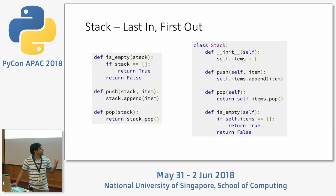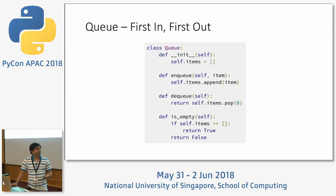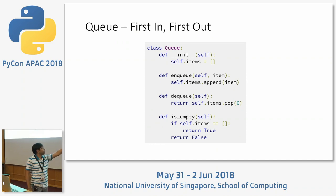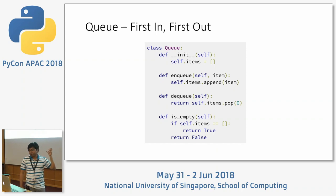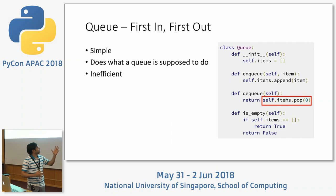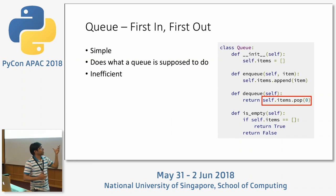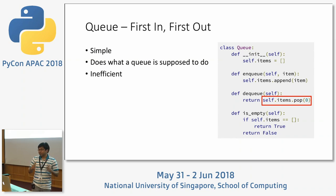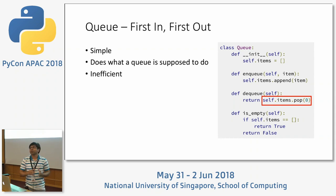Inspired by the simplicity, if we move to the next data structure — Queue — and do a similar implementation using lists, for enqueue we use append and for dequeue we use pop. But this time the difference is we are popping from the front. This is simple and does what a queue is supposed to do, but it's extremely inefficient. When you pop from the beginning of a list, the item gets removed and all following items are shifted one space. Students may think this is an O(1) operation, which it is not.